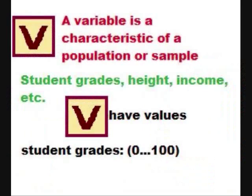A variable is the characteristics of a population or sample, and this is very different from a parameter. A parameter only refers to a population, whereas a variable is the characteristic of either a population or sample. Examples of variables include student grades, height, income, etc. Variables have values — for example, student grades can range from 0 to 100, with 100 being the highest.